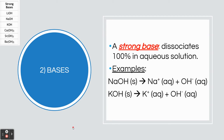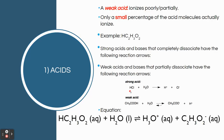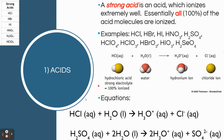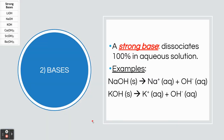Strong bases will dissociate — we say dissociate rather than ionize for bases because they already exist as ions. A difference to notice: when writing an ionization equation for an acid, the acid is aqueous. For a base, you start by writing it as a solid, then show the aqueous ions. Strong bases dissociate 100% in aqueous solution, and we use a one-way arrow for them.